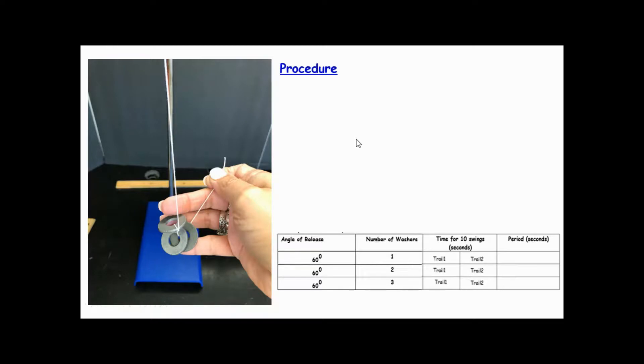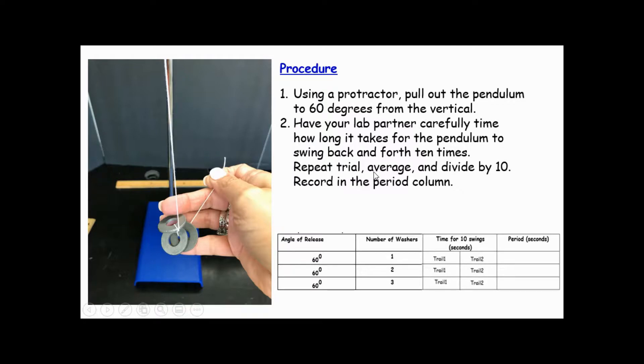For this procedure, you are going to keep constant the angle of release and the length of the pendulum. You are going to use a protractor and pull out the pendulum to 60 degrees from the vertical like you did in the prior procedure.